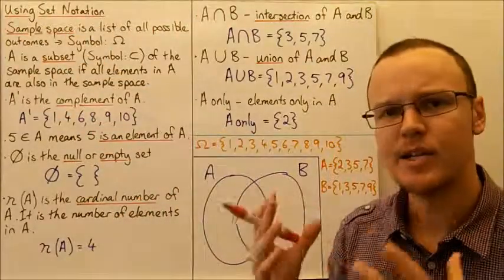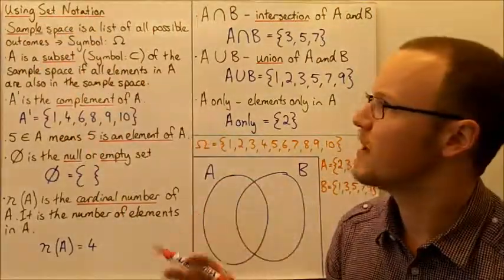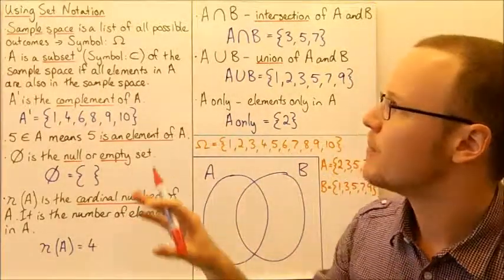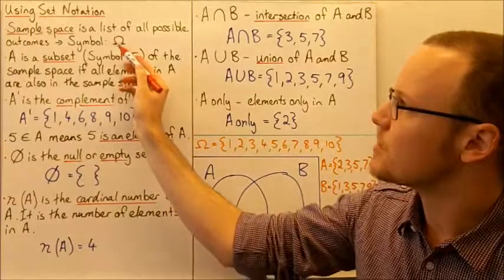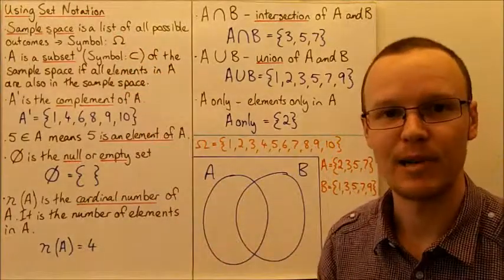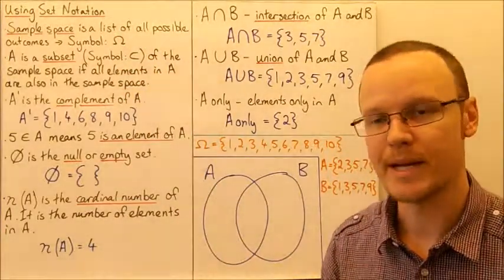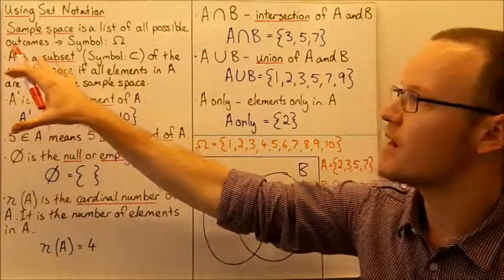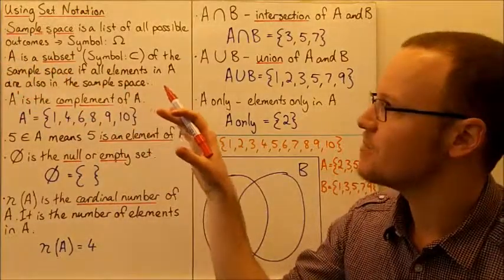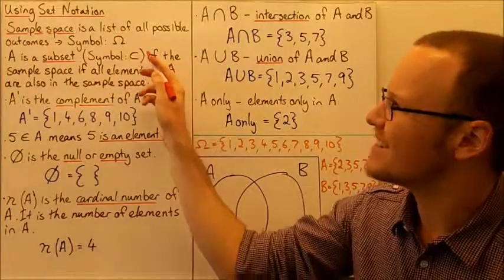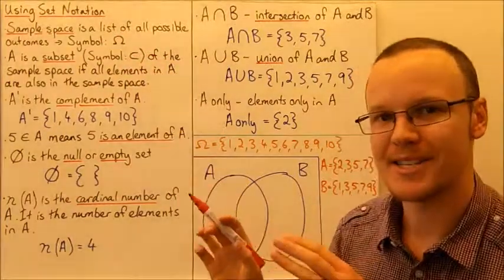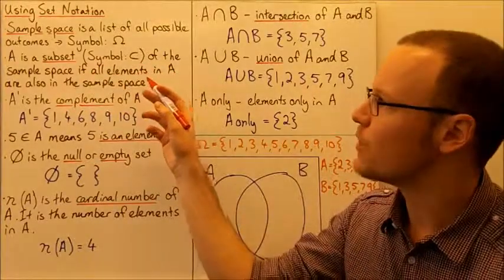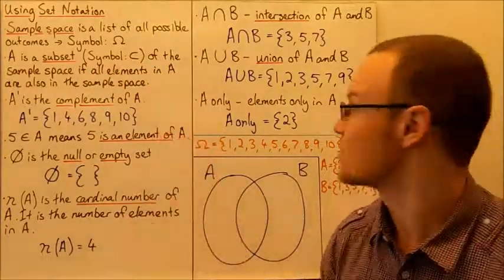A sample space is a list of all of the possible outcomes in a situation. There's a symbol for it, and that symbol is this funny-looking Greek letter here, which is called Omega.